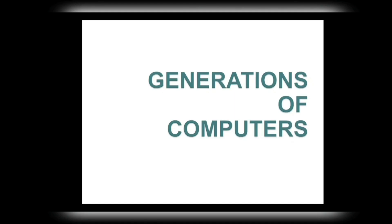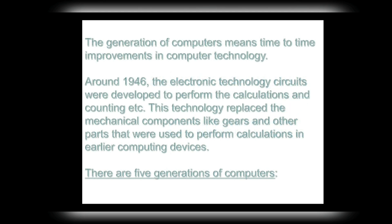Today we will continue with the new topic: Generations of Computers. The generation of computers refers to time-to-time improvements in computer technology. Around 1946, electronic technology circuits were developed to perform calculations and counting, replacing the mechanical components like gears and other parts that were used in earlier computing devices. There are five generations of computers.